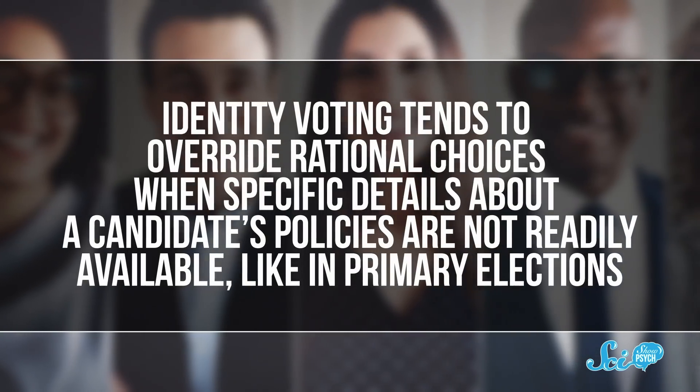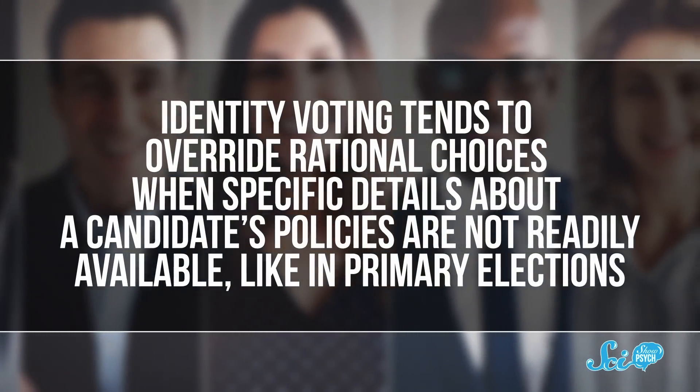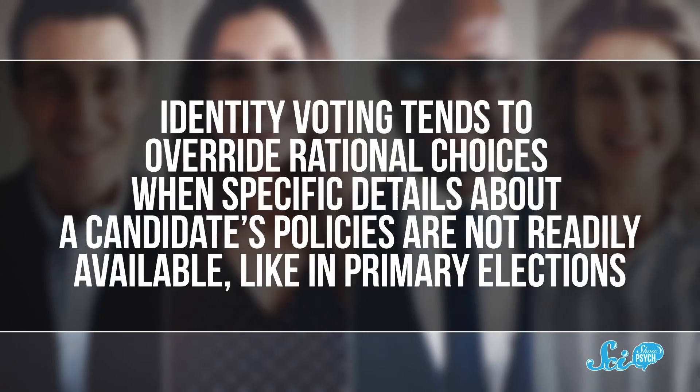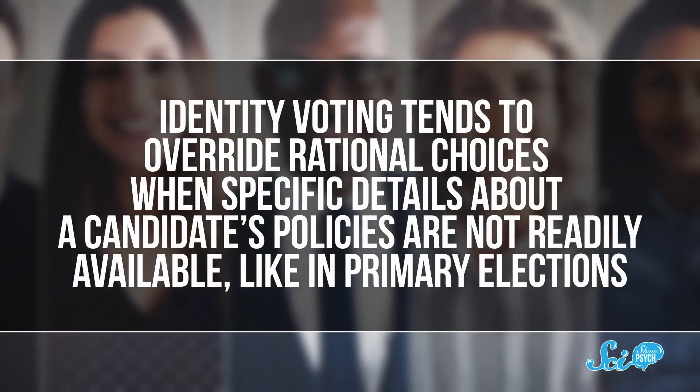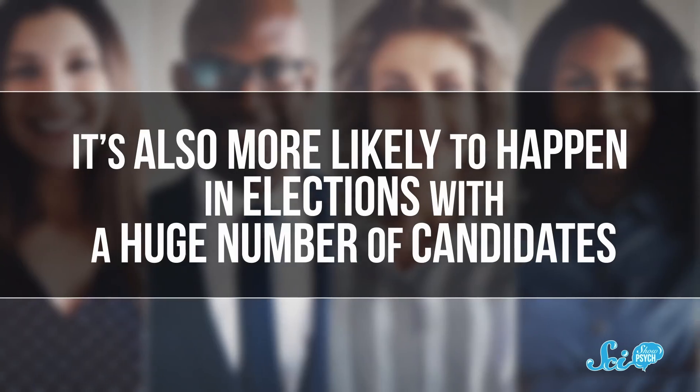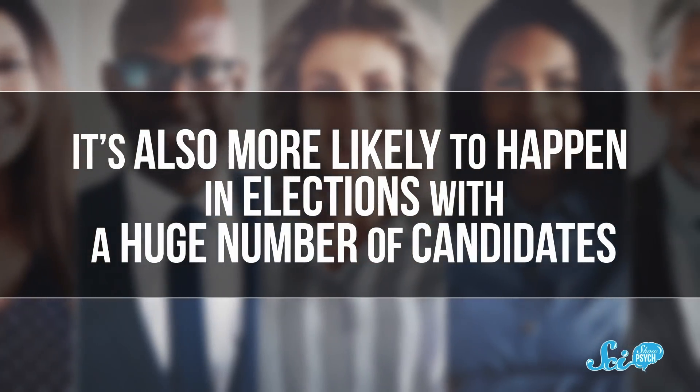Aspects of the election itself can also play a role. Identity voting tends to override rational choices when specific details about a candidate's policies are not readily available, like in primary elections. It's also more likely to happen in elections with a huge number of candidates, probably because it's harder to remember and keep track of every candidate's views and policies, so we tend to rely on our identities to guide our vote.